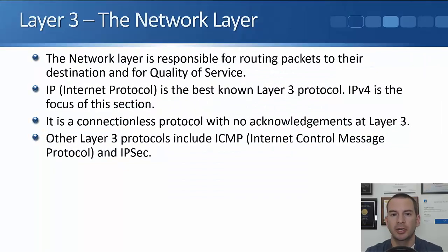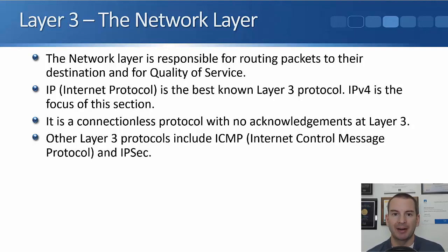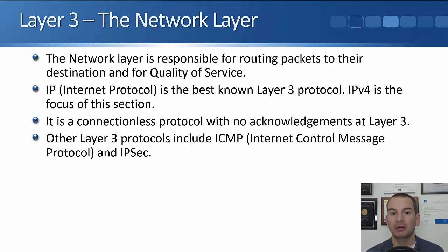In this lecture we're going to cover layer 3 of the OSI model, which is the network layer. The network layer is responsible for routing packets to their destination on the network, which is why routers operate at the network layer. It's also responsible for quality of service. For example, if you're running voice or video over IP it's sensitive to delay, so we give it better quality service than something like email.